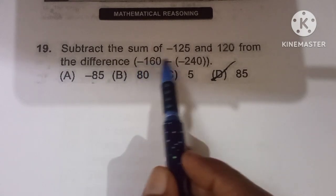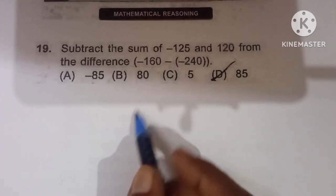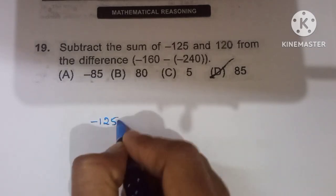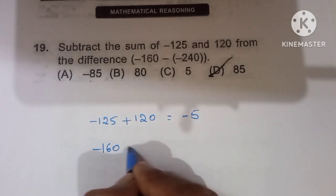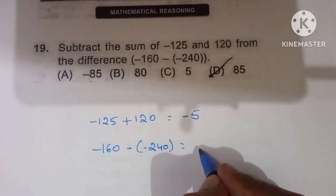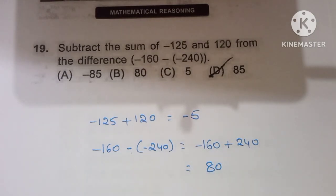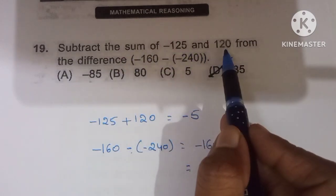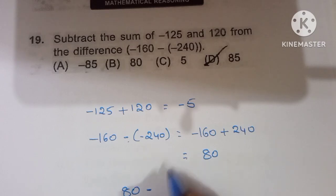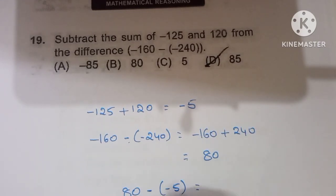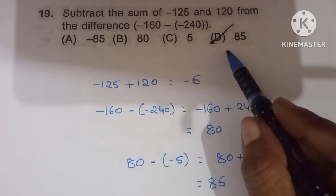Nineteenth question: subtract the sum of minus 125 and 120 from the difference of minus 160 minus of minus 240. Sum: minus 125 plus 120 equals minus 5. Difference: minus 160 minus of minus 240 equals minus 160 plus 240 equals 80. Then 80 minus of minus 5 equals 80 plus 5 equals 85. Option D is correct.